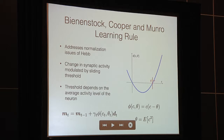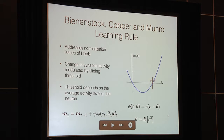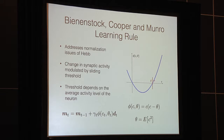Our learning rule is a generalization of a classic learning rule called the Bienenstock, Cooper, and Munro (BCM) learning rule, originally designed to address normalization problems associated with Hebbian learning. As with Hebbian learning, synaptic weights move in the direction of the input data. However, the sign and magnitude of this weight change is controlled by a nonlinear function depending on both the activity level of the neuron and a sliding threshold. This sliding threshold grows superlinearly with the activity of the neuron, acting as a regulatory mechanism to prevent synaptic weights from growing without bound.